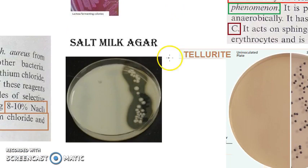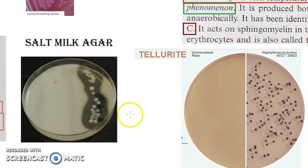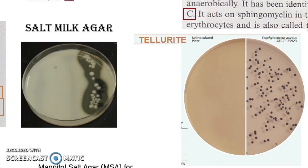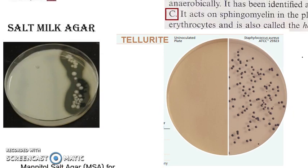The selective media for Staphylococcus are Salt Milk Agar and Ludlam's media. Ludlam's media contains lithium chloride and telluride. Salt Milk Agar contains NaCl, while Ludlam's media contains lithium chloride and telluride.